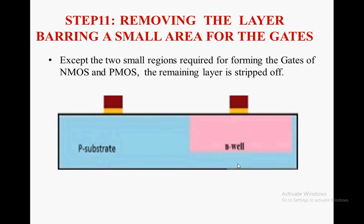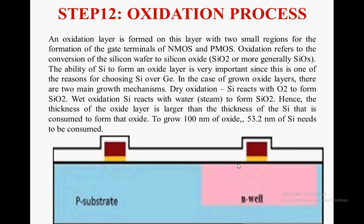In the next step, except for two small regions required for forming the gates of NMOS and PMOS, the remaining layer is stripped off. An oxidation layer is then formed with two small regions for the formation of the gate terminals of NMOS and PMOS. The ability of SiOx to form an oxide layer is very important, as it is one of the reasons for choosing silicon over germanium.